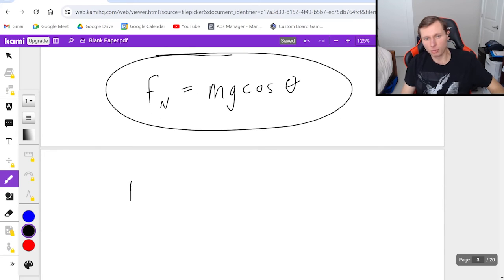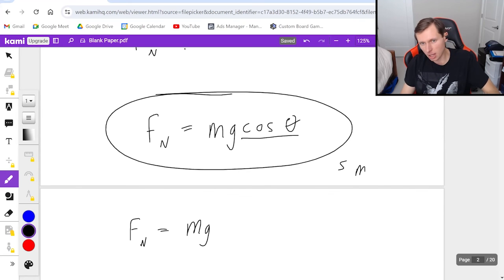Keep in mind normal force is usually equal to just m times g, but because it's at an angle we have that additional times cosine theta in there which is going to make the normal force a little bit smaller than usual. That's because cosine theta no matter what theta is is going to be smaller than just mg on its own. And so that's basically it for this problem.